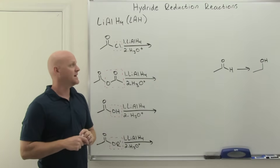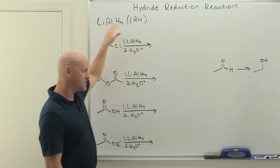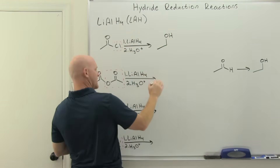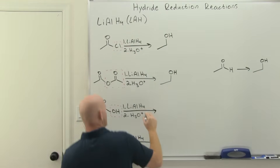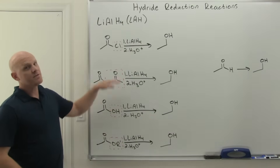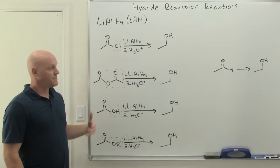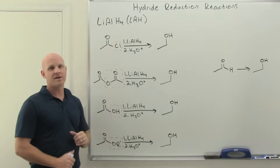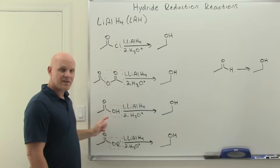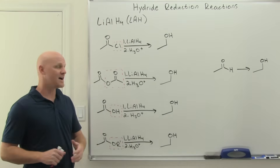With specialty reagents we'll see later, a few of these can be limited to stop at the aldehyde as the product. But with lithium aluminum hydride for all four — acid chloride, anhydride, carboxylic acid, and ester — the final result is a primary alcohol. The mechanism involves nucleophilic acyl substitution we've already covered, followed by nucleophilic addition of the aldehyde we covered in the last chapter. The carboxylic acid mechanism is slightly different, but most undergraduate students won't be responsible for those details.